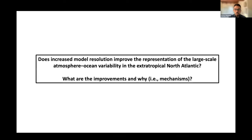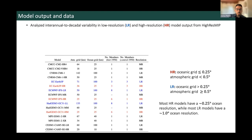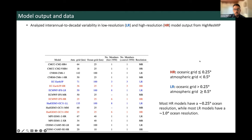Very broadly speaking, we know from previous studies that ocean model resolution is quite important for Gulf Stream related variability. But it remains somewhat unclear whether increasing model resolution leads to robust improvements in atmosphere-ocean variability when considering the broader extratropical North Atlantic region. This is the question we're addressing in our study — focusing on whether there are improvements and what the specific mechanisms are. We address this through analysis of the interannual to decadal variability of both low-resolution and high-resolution models from High-Res MIP.